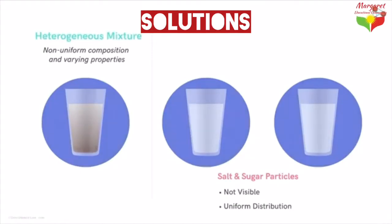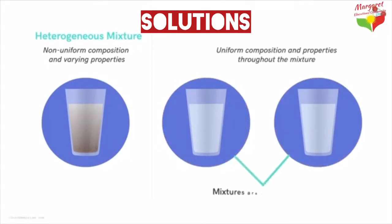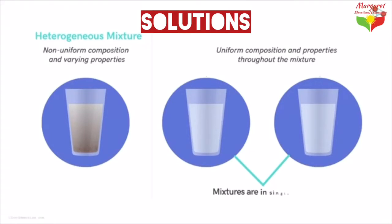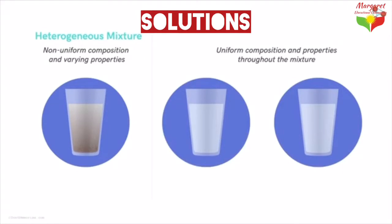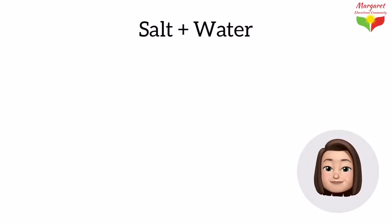This type of mixture, which has a non-uniform composition and varying properties, is called a heterogeneous mixture — meaning the components are not identical. In the second and third mixtures, the composition is uniform throughout and the components are in a single phase; we cannot separate or see the individual components. This type of mixture, whose composition and properties are uniform throughout, is called a homogeneous mixture.